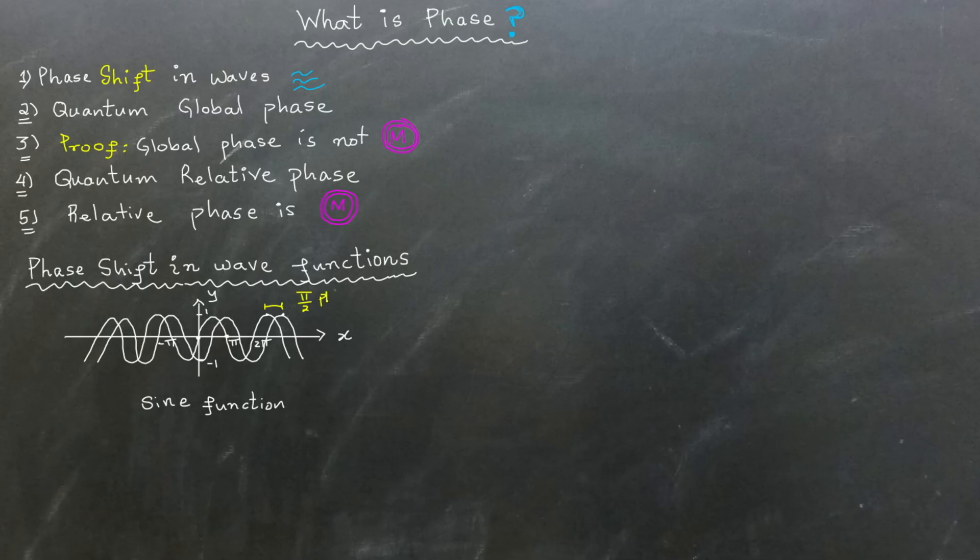In this example diagram, the graph has shifted by pi over 2 radians or 90 degrees, resulting in a phase shift of pi over 2. Since points on a wave function can be represented on the unit circle, a phase shift can also be thought of as moving along the circle.